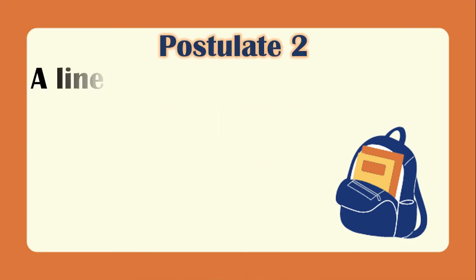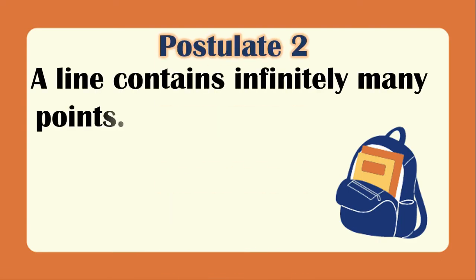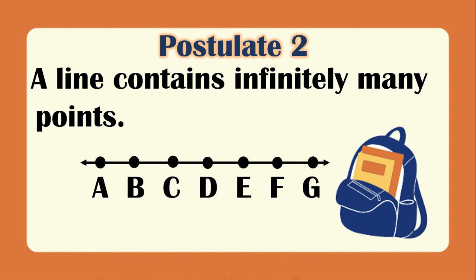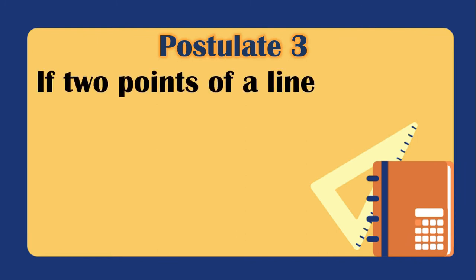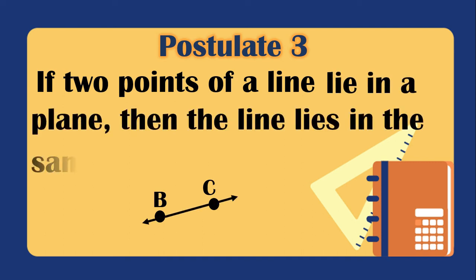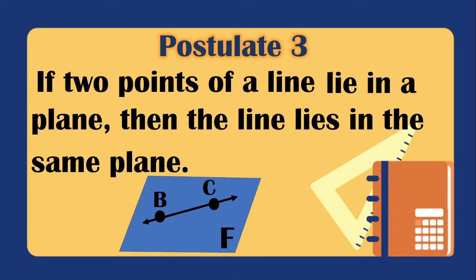Postulate 3: if two points of a line — say points B and C — lie in a plane, then the line lies in the same plane, so line BC also lies on plane F. Postulate 4: any three points lie in at least one plane, and any three non-collinear points lie on exactly one plane. Non-collinear points are points that do not lie on the same line.